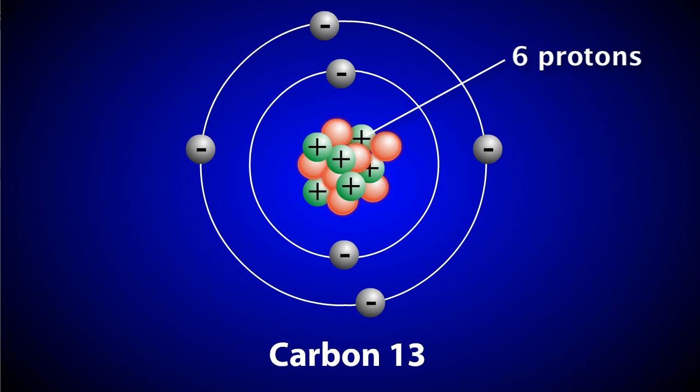Another carbon isotope is carbon 14. Carbon 14 has the characteristic six protons found in all carbon atoms, but in this case it has eight neutrons.